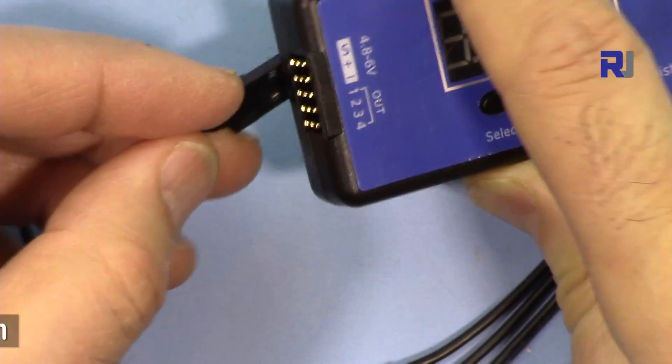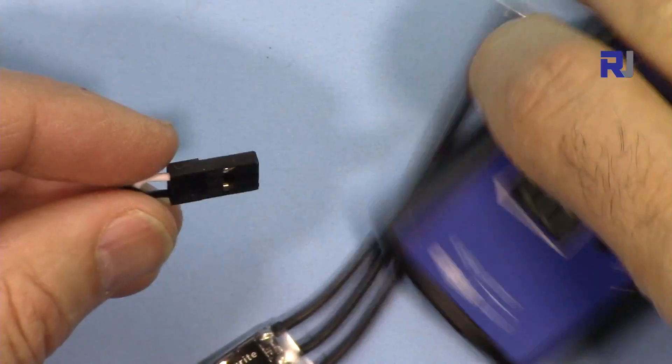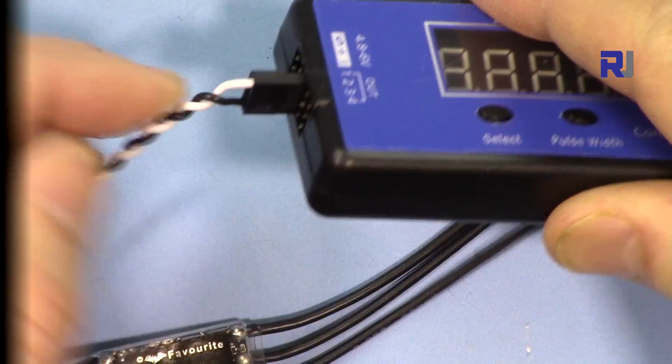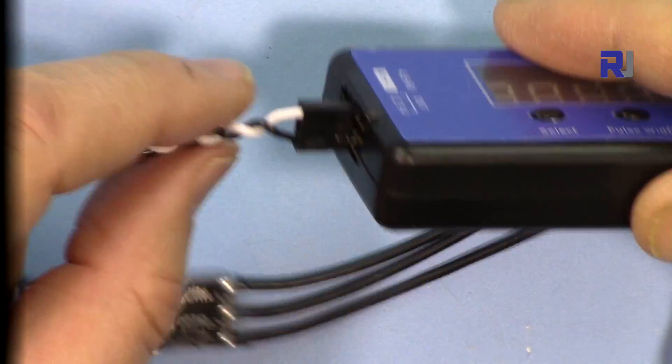When you're holding it like this, the black one, the negative, is always at the bottom. You see the white is the signal at the top and the middle one doesn't have any signal cable.